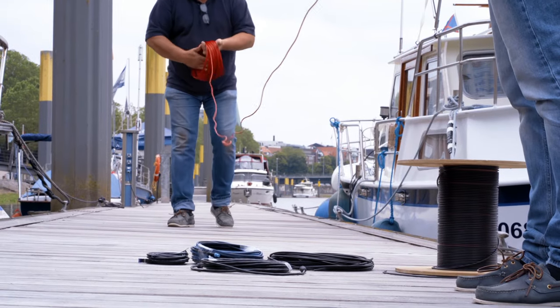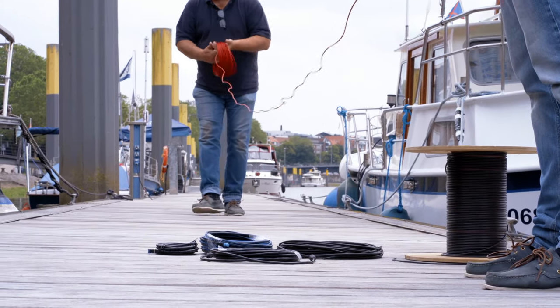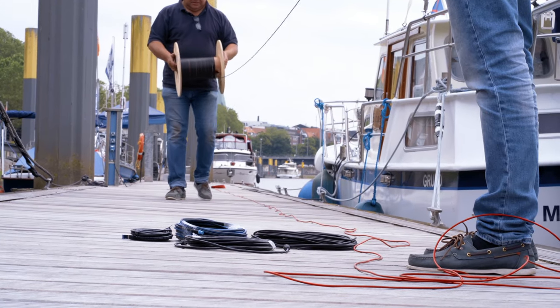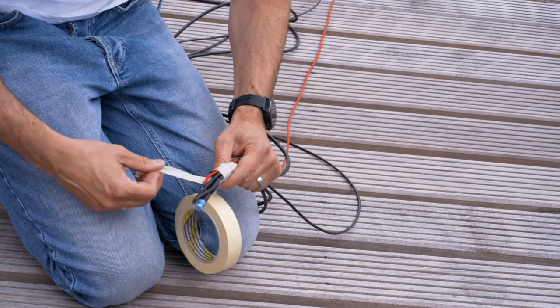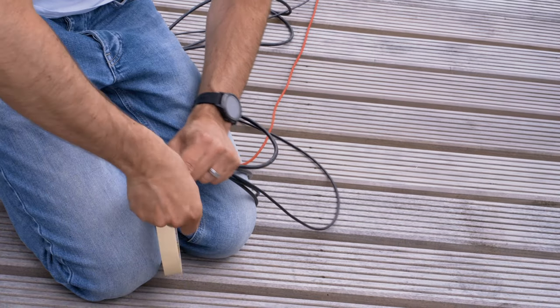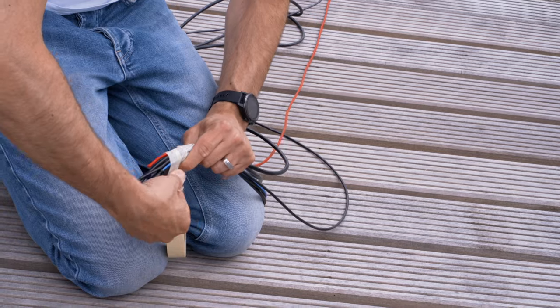To avoid twisting the cables during installation, we recommend unwinding all wires neatly beforehand and combining into one single strand. Use masking tape or insulating tape to do this, as it is flexible and can easily be removed afterwards.